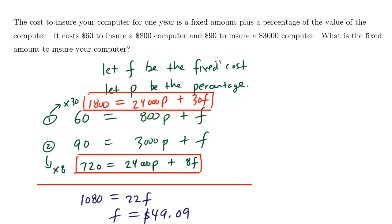So for this fixed cost insurance type question, the key is to remember to define your variable P. Let P be the percentage. Don't forget to go pee.